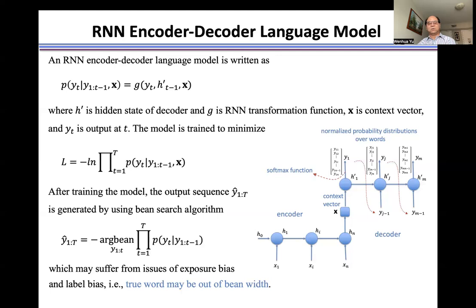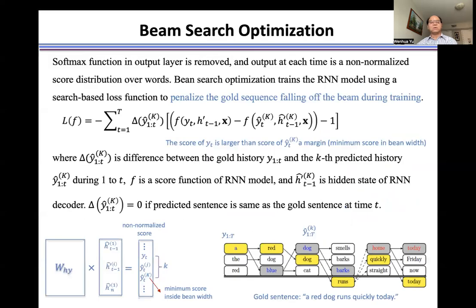To solve this problem, first we remove the softmax from the output layer. That means the model generates a non-normalized score distribution.